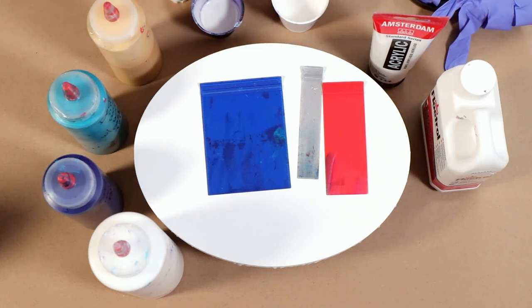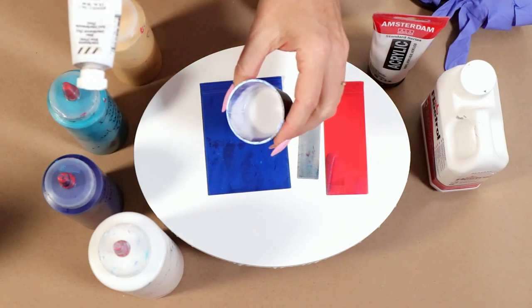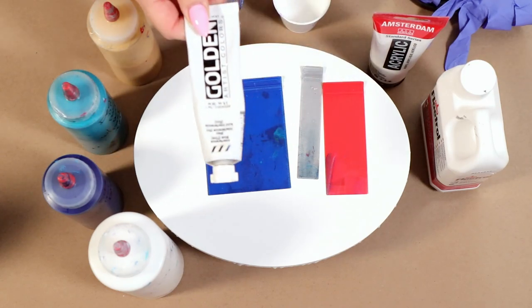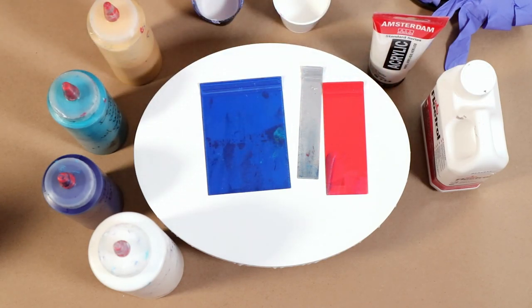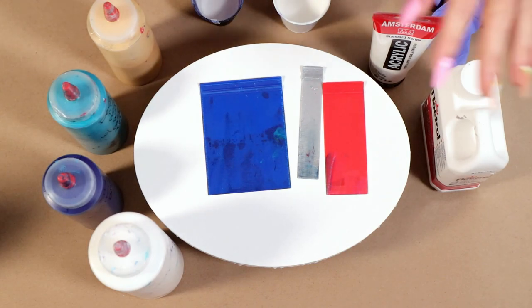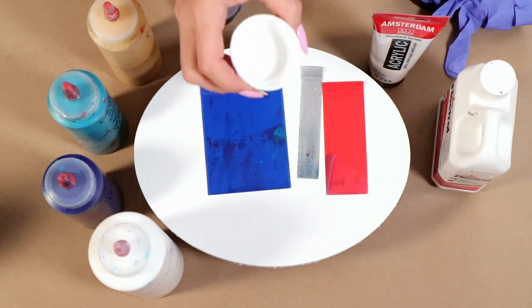Then I've got this pretty color, it looks just plain white but it's not, it's Interference Blue from Golden. That Interference is really pretty, when it dries it has the look of blue, it's silky almost looking.